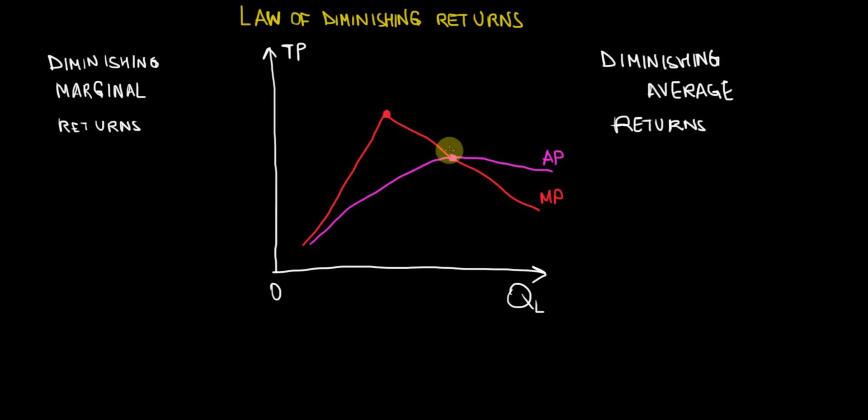And that theory in economics is called the law of diminishing returns. So the law of diminishing returns claims that the more we employ a certain type of factor, the less productive it becomes.